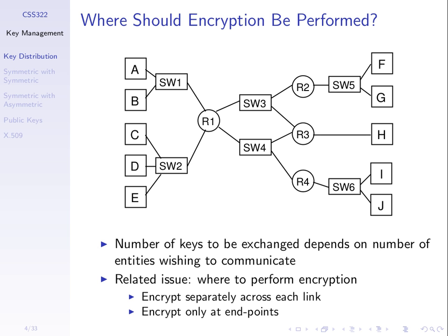The second approach is link-level encryption: encrypt across each link. A encrypts and sends to the switch; the switch decrypts, then re-encrypts with a different key to send to router 1; router 1 decrypts and re-encrypts again, and so on across each link. So there are two basic approaches: encrypt across the links in a network, or encrypt end-to-end at the endpoints only.